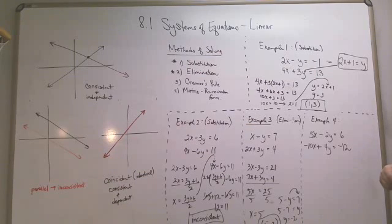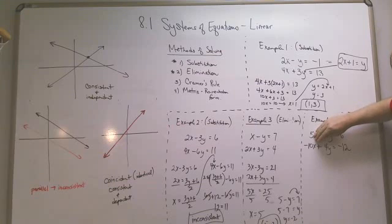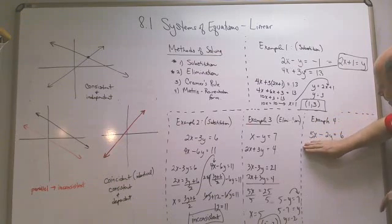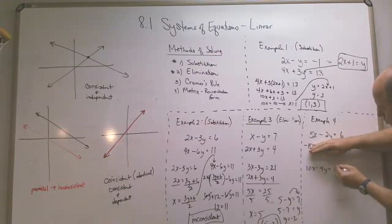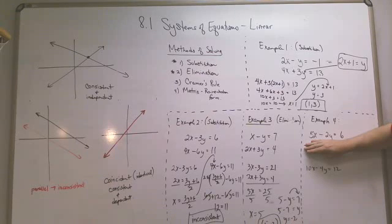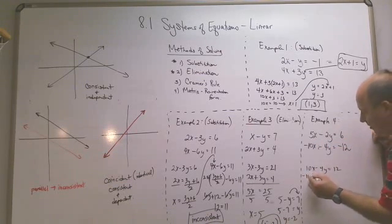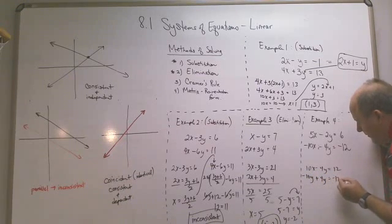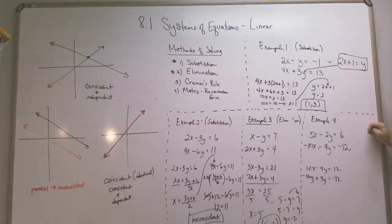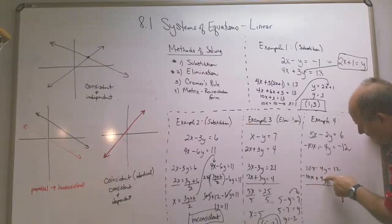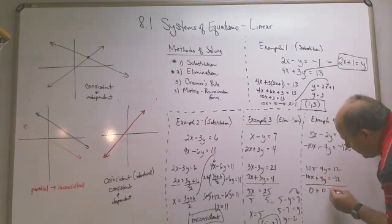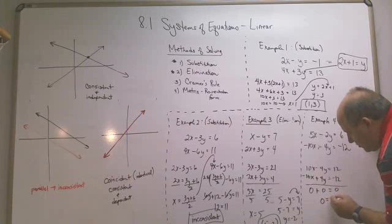In example 4, let's use the elimination method again and eliminate the x's. Multiply the top equation by 2: 10x minus 4y equals 12. The bottom has negative 10x, so adding them, the x's cancel. But everything else cancels too — you end up with 0 equals 0, which is always true.